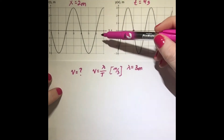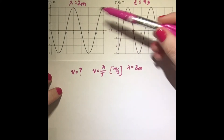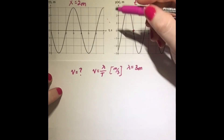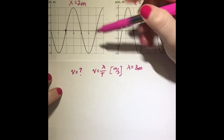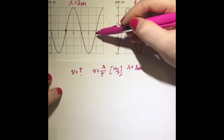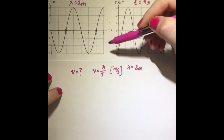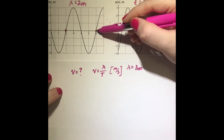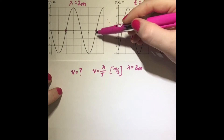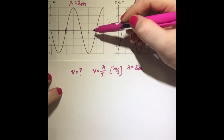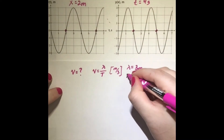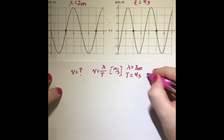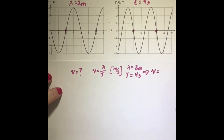We do a similar process for the period. We look at the y(t) graph and pick a point, say time equals 2 seconds. Following along to another similar point, we go up, down, and back up — completing one full period. Counting how many seconds that spans: 1, 2, 3, 4 seconds. So our period is 4 seconds. Dividing wavelength by period, we get a velocity of 3/4 meters per second.